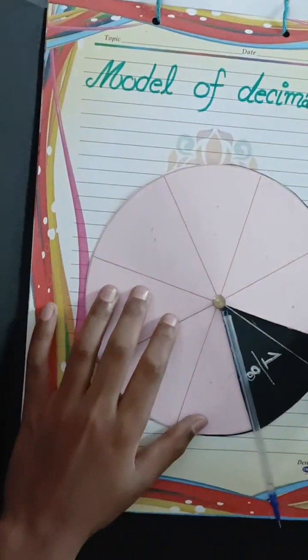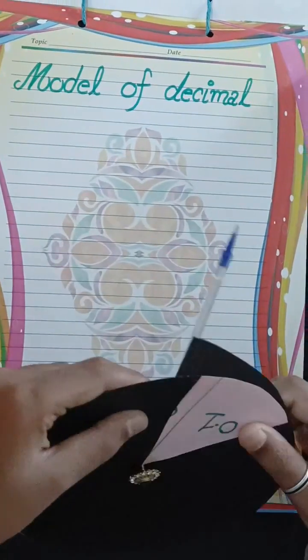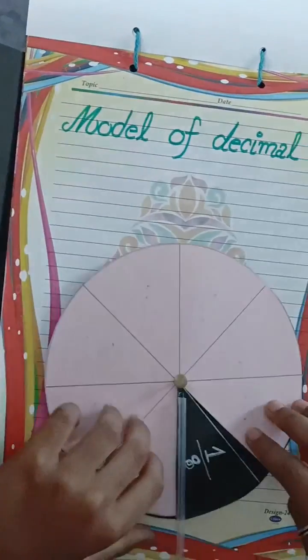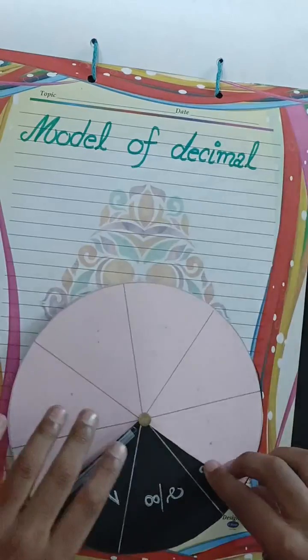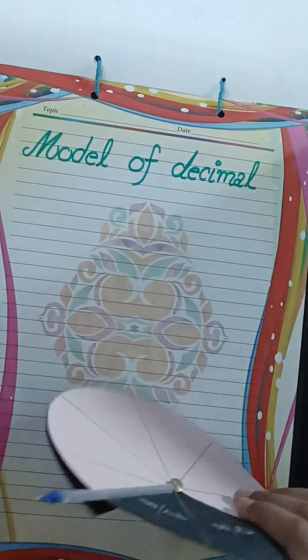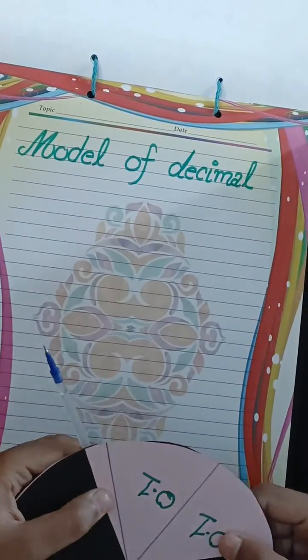Now model of decimal. This is 1 by 8 and 0.1. This is 2 by 8. This is 0.1 and 0.1 equals to 0.2.